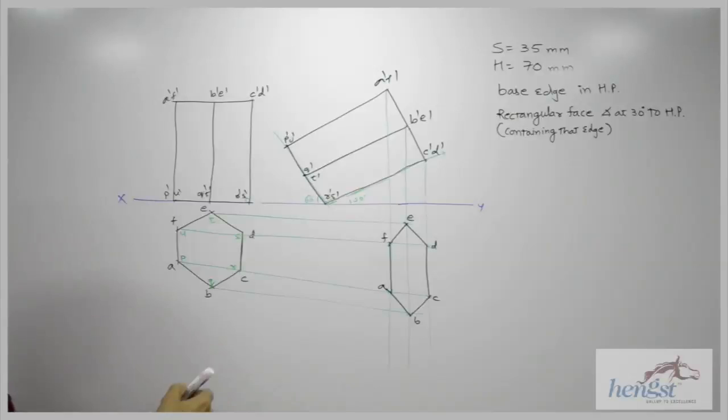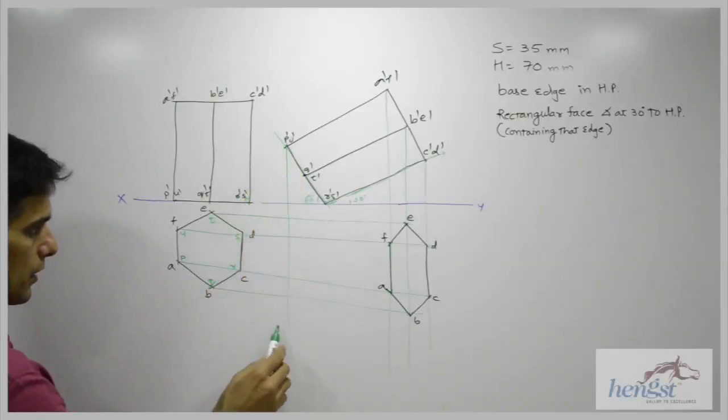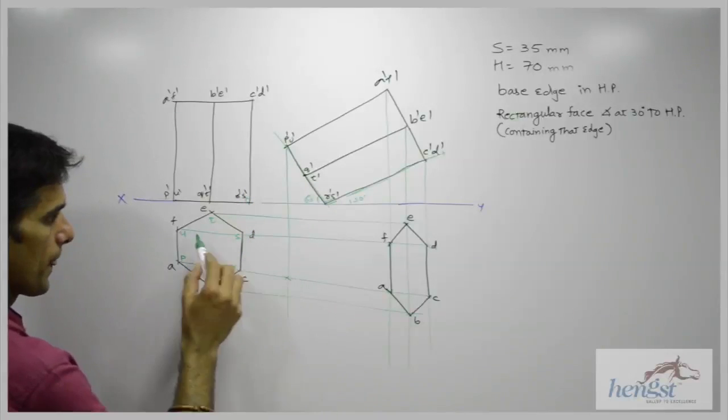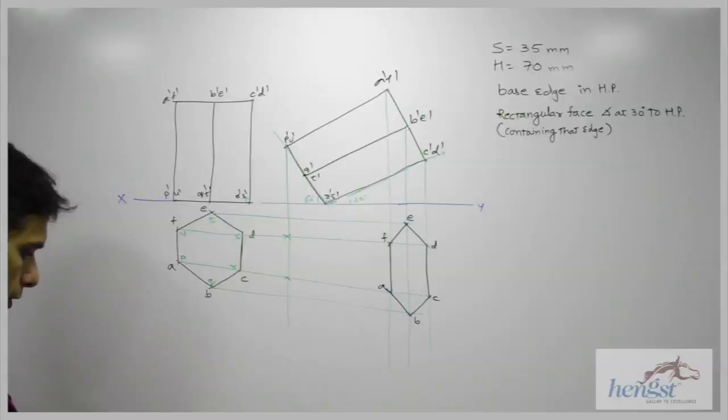So we need to extend p dash, u dash from here and p from here, u from here. So we got points p and u.